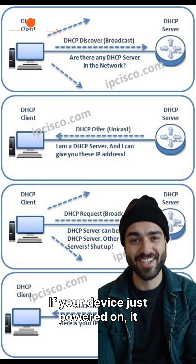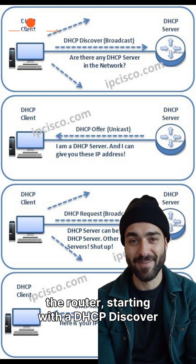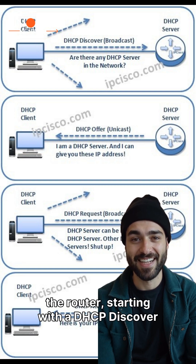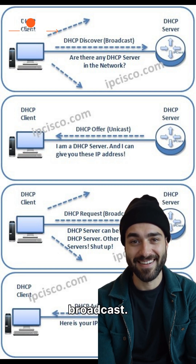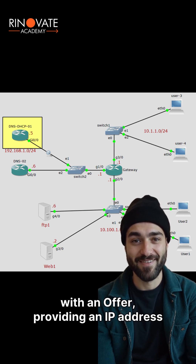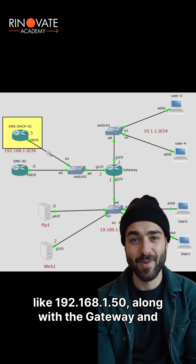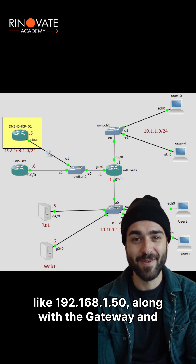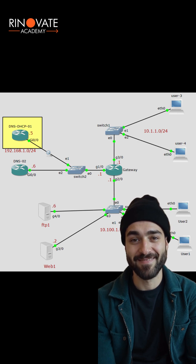If your device just powered on, it needs an IP address and to locate the router, starting with a DHCP Discover Broadcast. The DHCP server, typically your router, responds with an offer, providing an IP address like 192.168.1.50, along with the gateway and DNS server details.